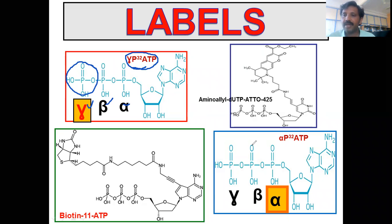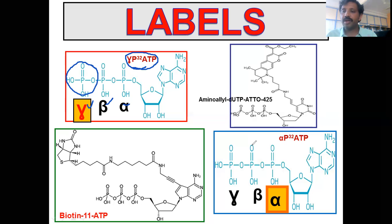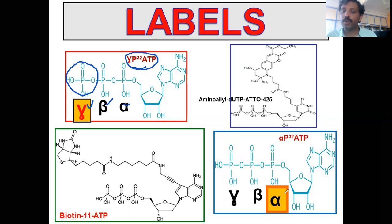For nick translation, random priming, and polymerase chain reaction, the new labels are involved in the phosphodiester bond formation. For these methods, alpha-labeled ATP or other alpha-labeled nucleotides are used. These are the two famous radioactive materials for labeling DNA and RNA fragments.